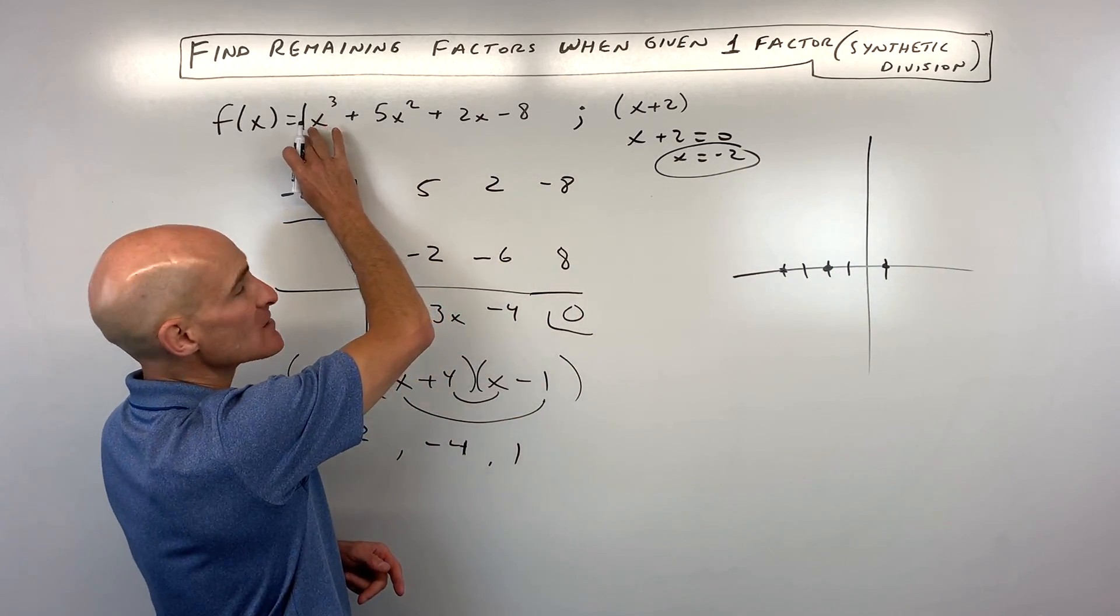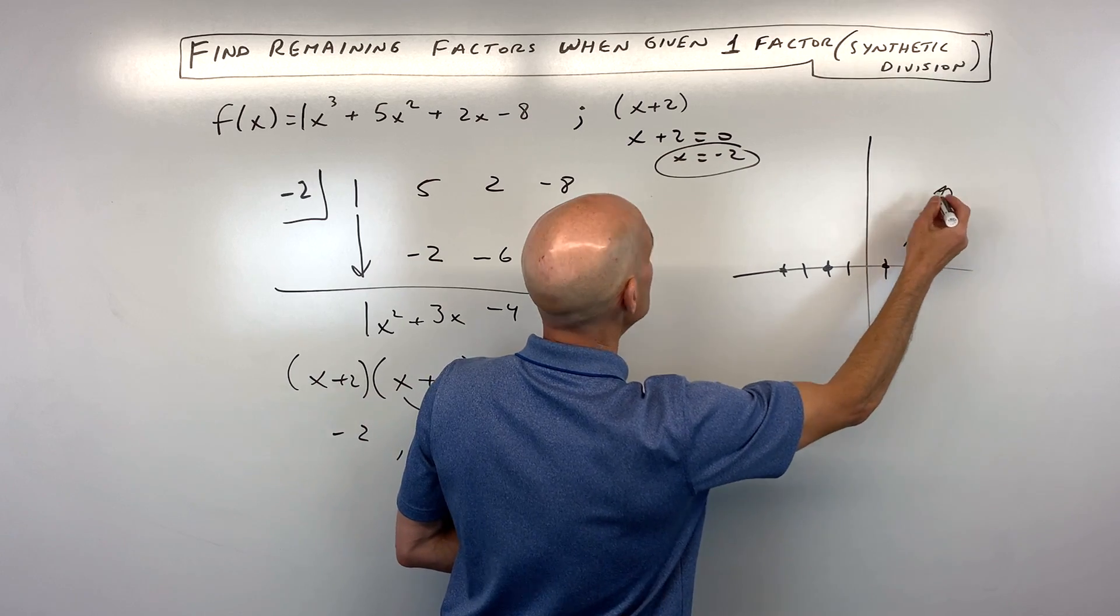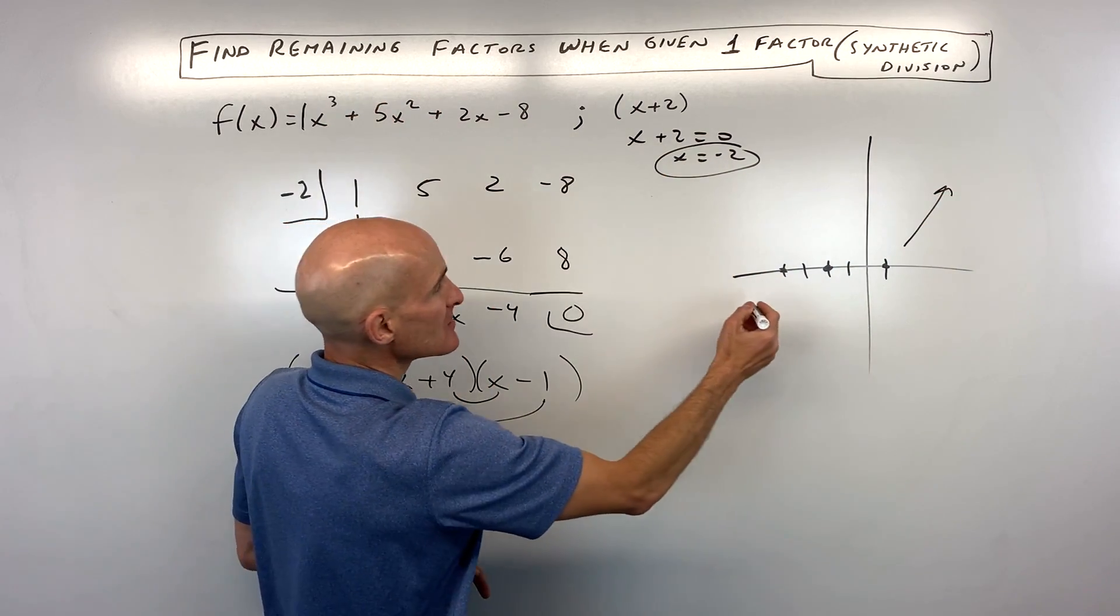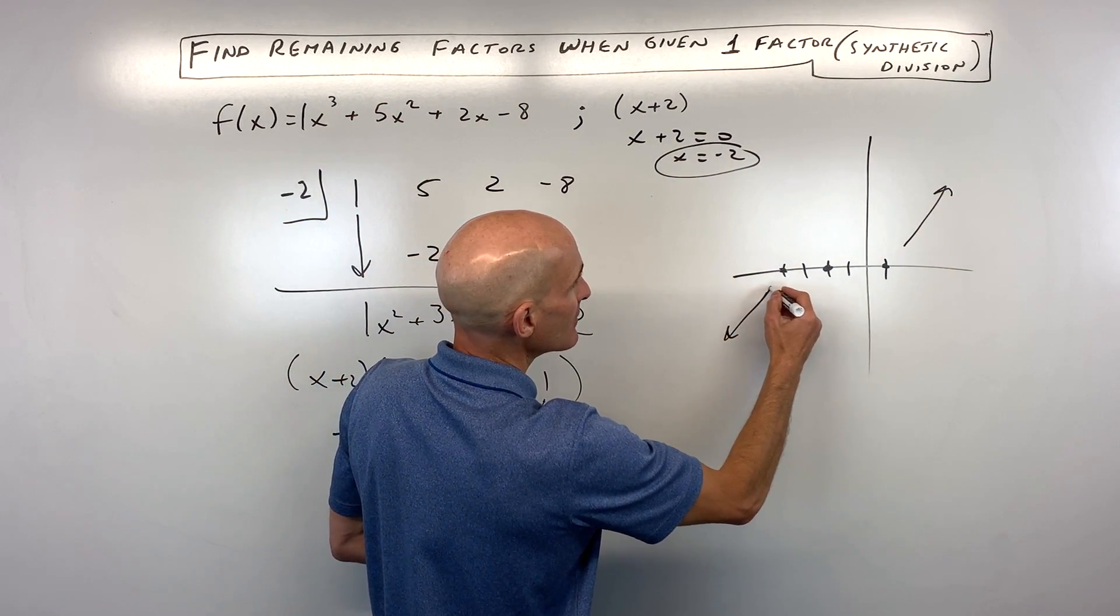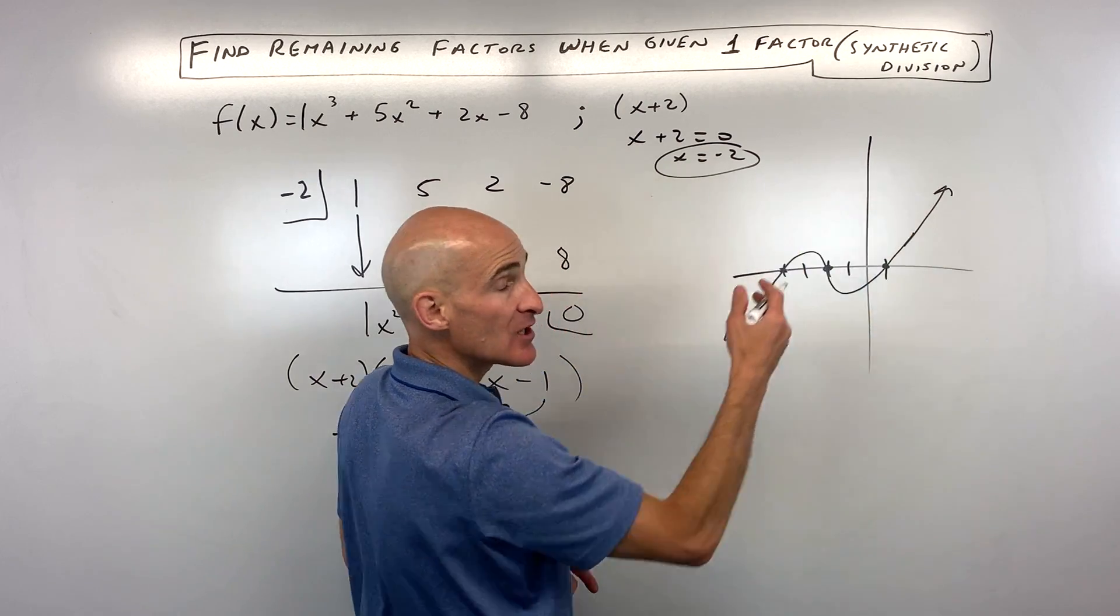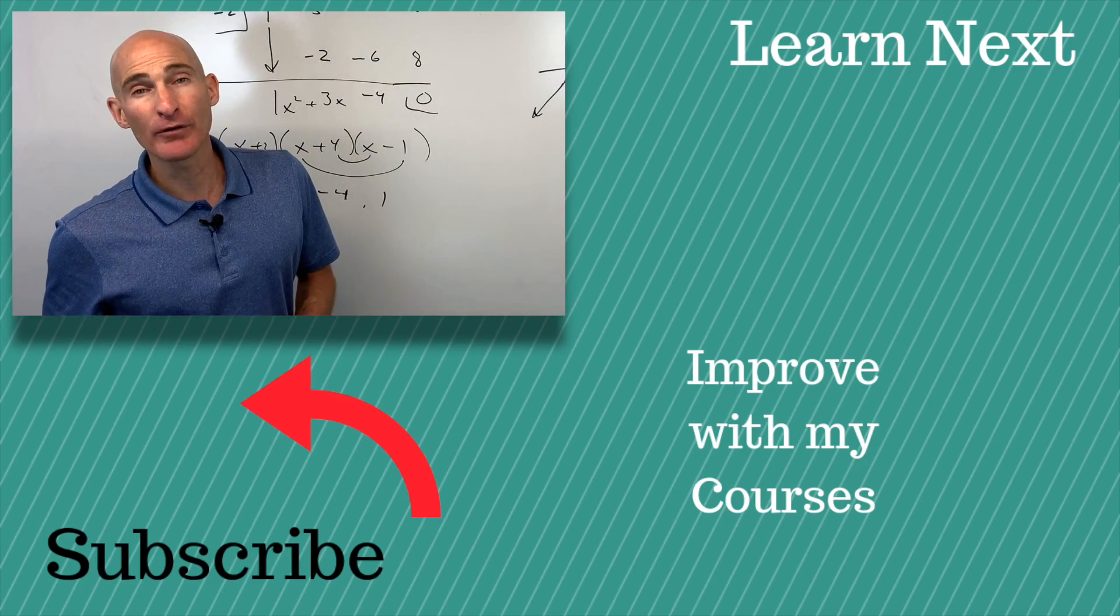We know the leading coefficient is positive, so it's going to go up to the right. We know it's an odd degree, it's 3, so it's going to go the opposite way to the left. All these zeros occurred only once, and you can get a good sketch of your polynomial function.